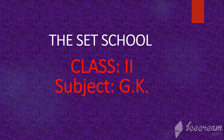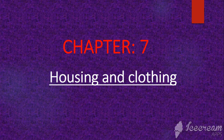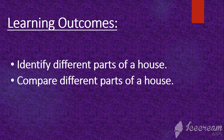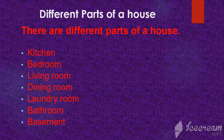Assalamu alaikum, welcome to the Set School Class 2 Subject GK Chapter 7 Housing and Clothing, Topic: Parts of a House. Learning Outcomes: Identify different parts of a house and compare different parts of a house. There are different parts of a house.